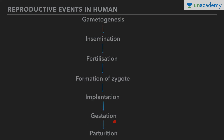Then there is gestation, that is embryonic development that lasts nine months in case of humans. And then we have parturition, that is delivery of the baby and placenta.